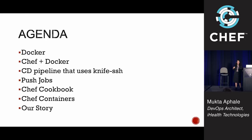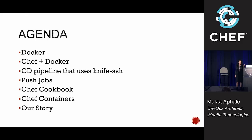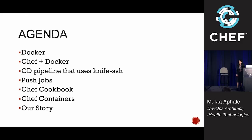We'll quickly go through a quick introduction to Docker, then why Docker and Chef can be friends — there is a line of thought that says if you're using Docker, you don't have to use Chef. I'll go through a simple CD pipeline in which we've used Knife SSH. We explored a little bit of push jobs, then gradually used a Chef cookbook. Then we had a sneak peek into Chef containers, and we'll conclude with some of the lessons that we learned in this Docker and containerization work.